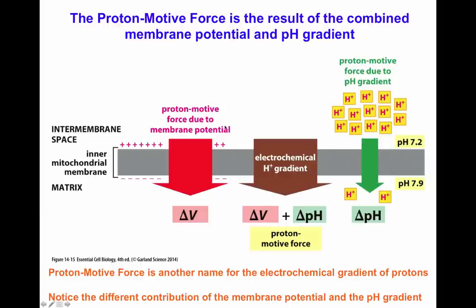On the other hand, the proton motive force also uses the membrane potential — the differential charges across the inner mitochondrial membrane, being positive on the outside and negative on the inside. That membrane potential has a great influence on the proton motive force, as indicated here by the red arrow. The electrochemical gradient of protons is the combination of the membrane potential as well as the pH gradient.